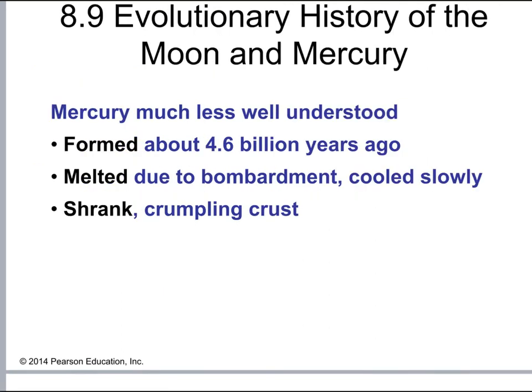Mercury is less well understood. It formed alongside the other major planets about 4.6 billion years ago. During the early bombardment period, constant impacts from comets, asteroids, and meteorites melted Mercury entirely. Over a long period it cooled and solidified, and as it did, it shrank, causing the crust to crumple — which explains the scarps seen today. That is our overall understanding of the Moon and Mercury, their similarities, and their differences.